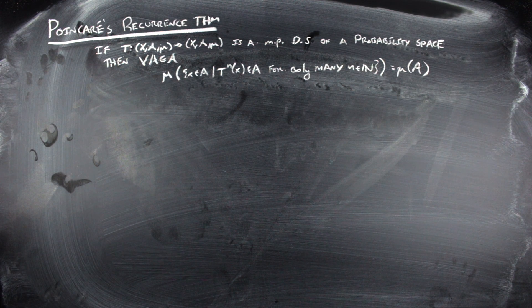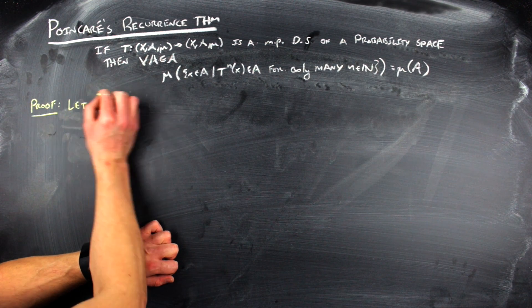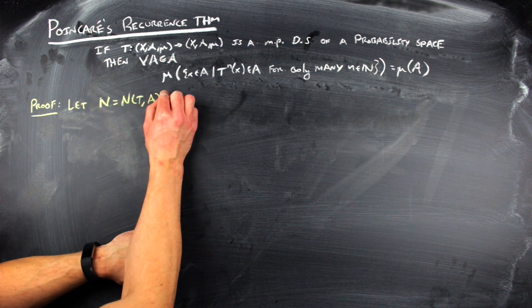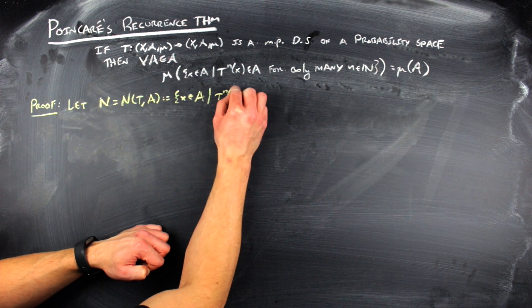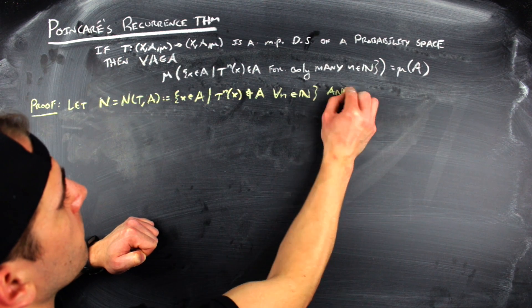This is a very cool result — it says that in a closed system, nothing escapes its original position forever. The proof uses a little measure theory and understanding what it means to revisit a set infinitely often under iteration. We begin by defining N = N(T, A) as the set of all x's within A that never return to A under any iteration n ≥ 1.